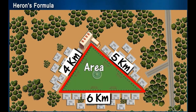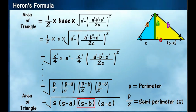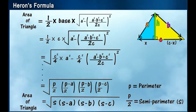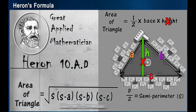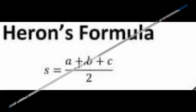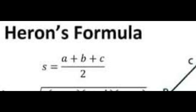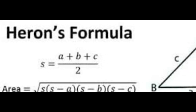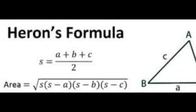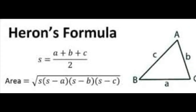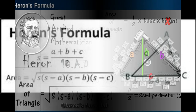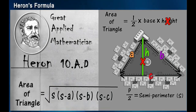Area of the Triangle, let's calculate! The Heron's formula, it's so great. Square root of S into S minus A, S minus B, S minus C. S is A plus B plus C divided by 2. Now you've got the tools, you know what to do. Area of the Triangle, let's calculate! The Heron's formula comes to dominate.